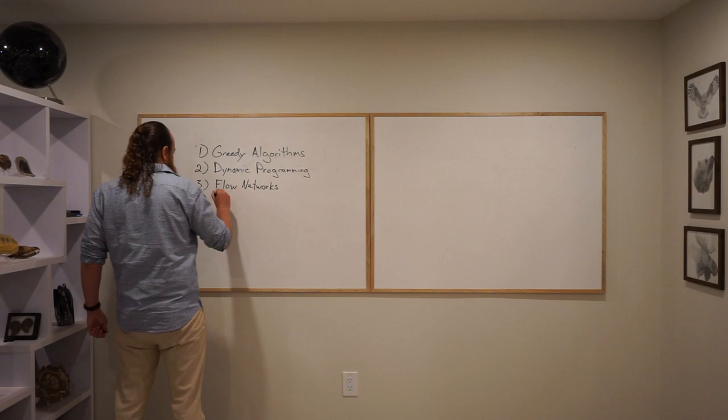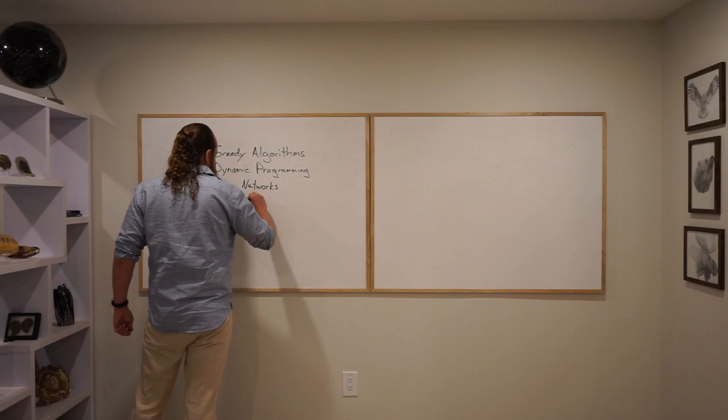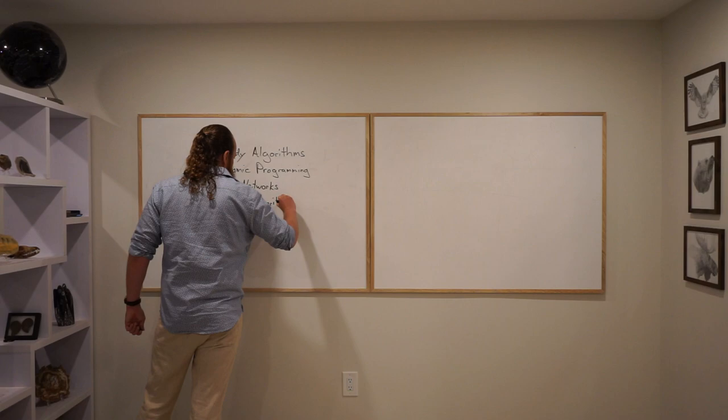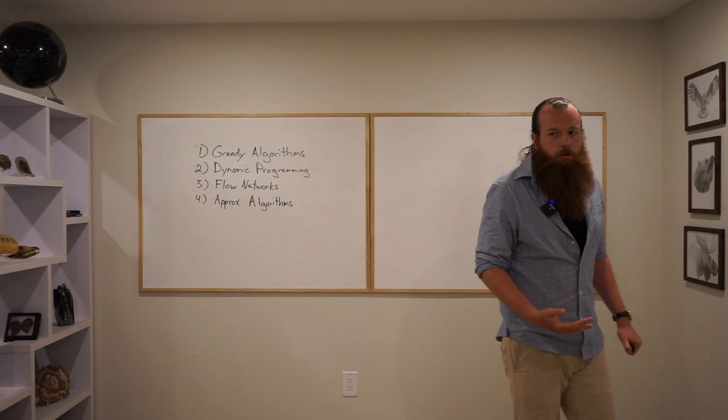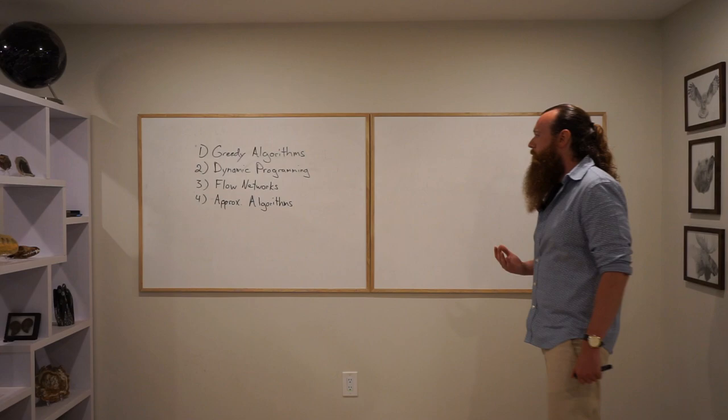So that's the first three. The last part of the course, you can think of this as four parts, approximation algorithms. We talked a little bit with the greedy algorithms, something might be optimal, suboptimal, or oftentimes it might be just infeasible to come up with an optimal algorithm.